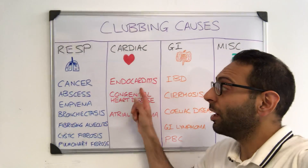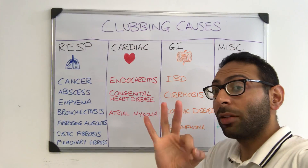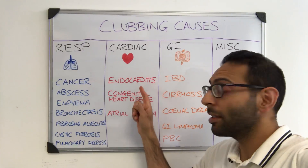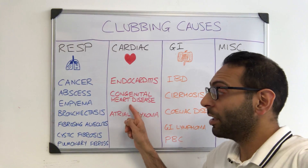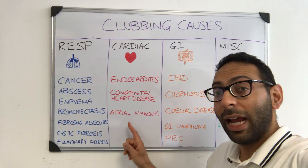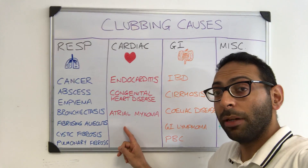In terms of the heart, there are three main causes to think about: endocarditis, congenital heart disease, and atrial myxoma.